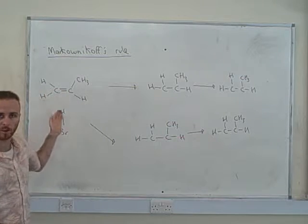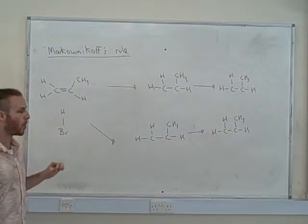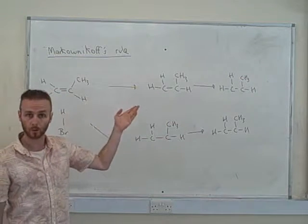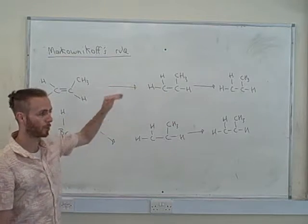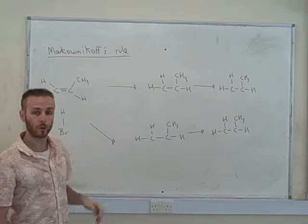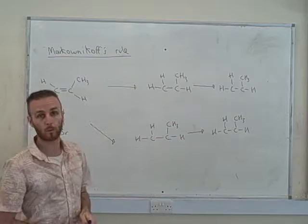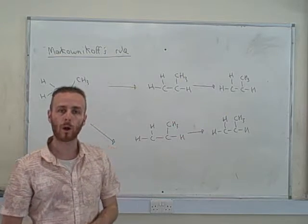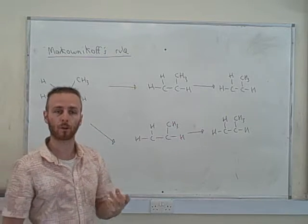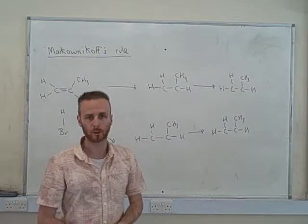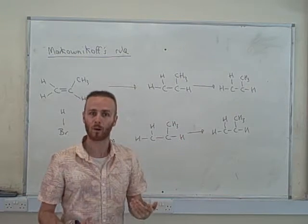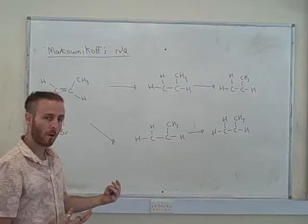So this is when Markovnikov's rule comes into place. If either one of these were symmetrical, it wouldn't matter because we would only end up with one product. As they're unsymmetrical, we're going to get a mixture of two different products. And this rule talks about which will be your major product and which will be your minor product. So which product will you get more of? So, just a little bit of a recap first.